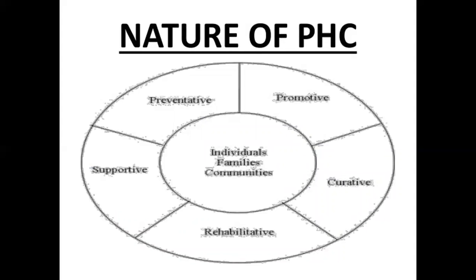The nature of primary health care is mainly preventive — preventing people from getting any type of disease through proper health education, immunization, and promotive measures like promotion of their health. It also includes curative measures such as proper treatment to cure disease conditions, and rehabilitation — giving artificial limbs or proper rehabilitation for psychiatric patients.